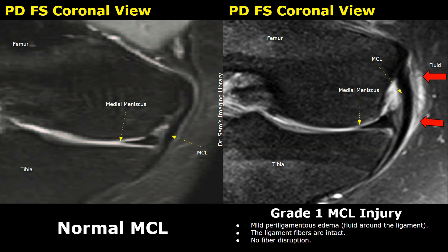We will compare the normal appearance of the MCL with images showing MCL injury. These are coronal images of the knee. The coronal plane is very good for evaluating the medial collateral ligament. Proton density fat-suppressed sequence enhances the visibility of edema and injury to the ligaments. A T2 fat-suppressed sequence is also helpful.